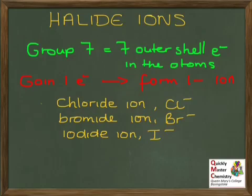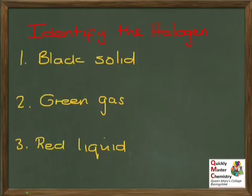Finally, just to test how you've been getting on with what you're supposed to memorise here, if you were presented with these three substances and told that they were halogens, you ought to be able to pick out which one is which halogen. So pause the video and just make sure you can do that. Hopefully you decided the black solid was iodine, the green gas was chlorine, and the red liquid was bromine.